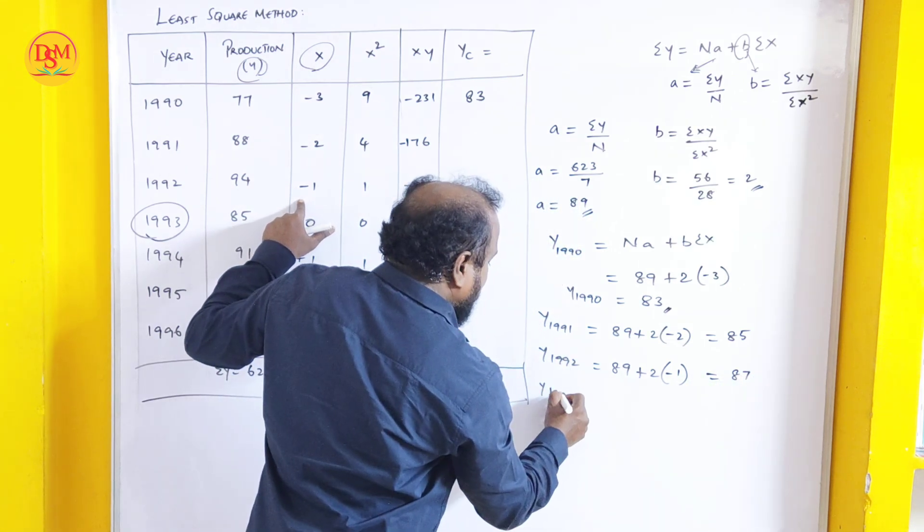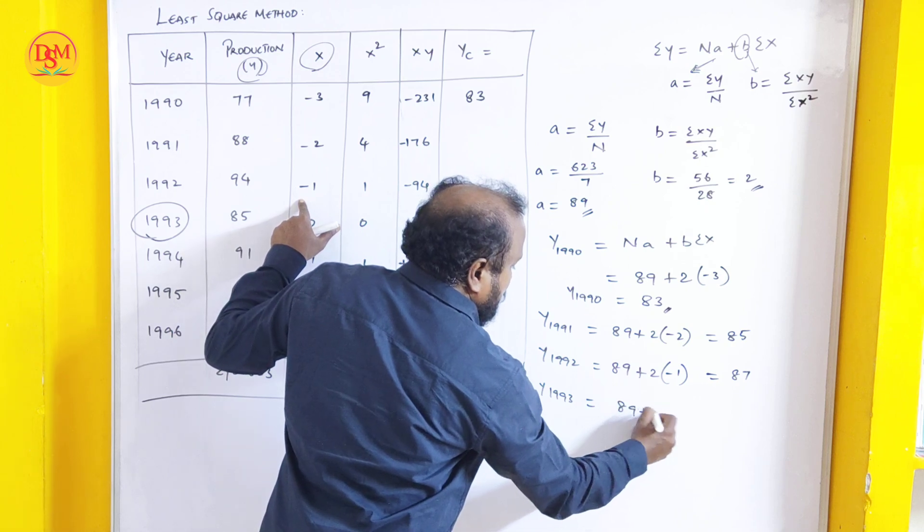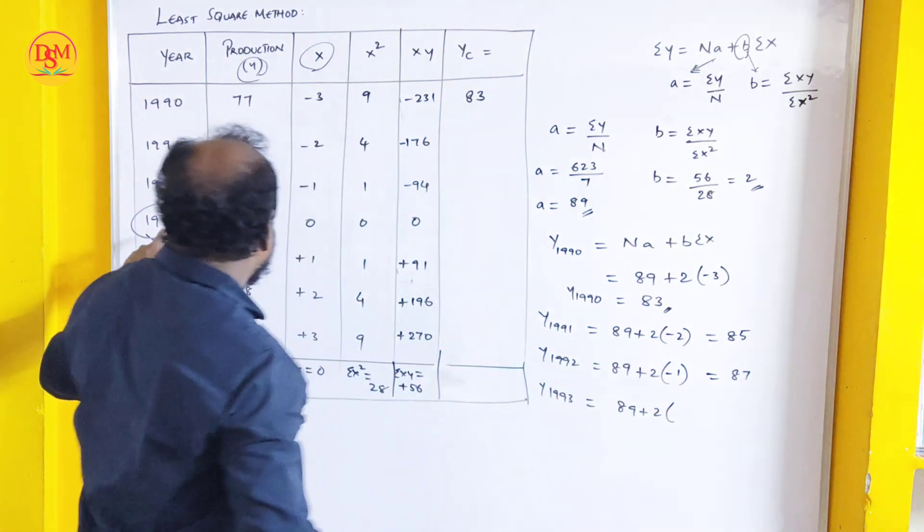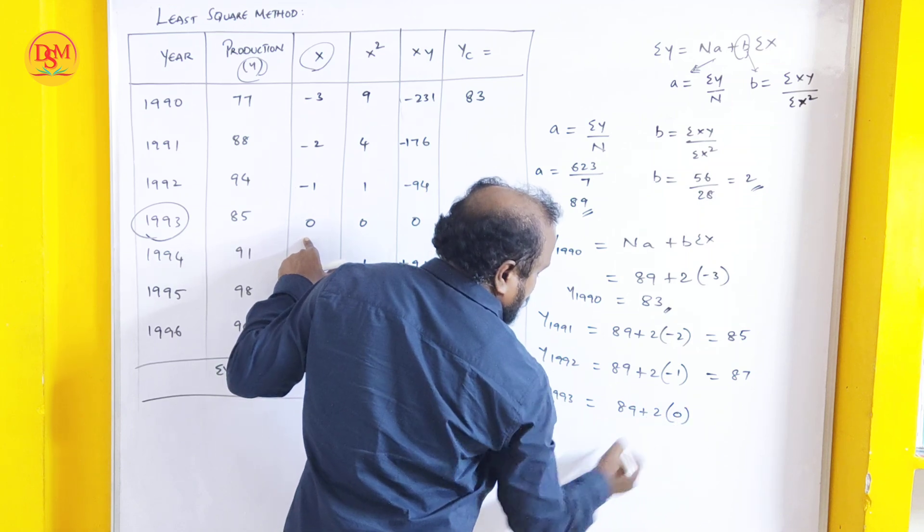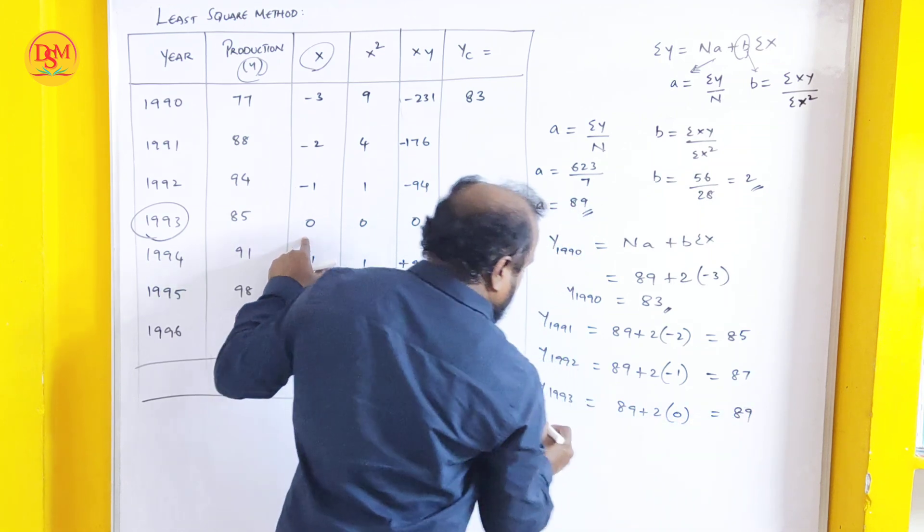Next 1993. A value is 89 plus b value is 2. Sigma x value is 0. 2 into 0 is 0. 89 plus 0 is 89.